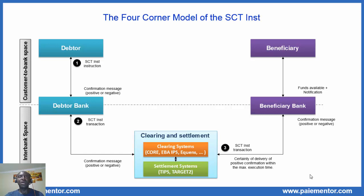In step 3 we are in the clearing system. The CSM performs all the necessary technical and functional checks and forwards the SEPA transaction to the beneficiary bank. In case there is any problem, the CSM may reject the transaction and send a negative confirmation message to the originator bank, and that will be the end of the process. Assuming all goes well, the transaction is forwarded successfully to the beneficiary bank.